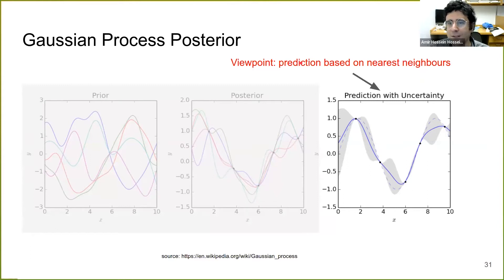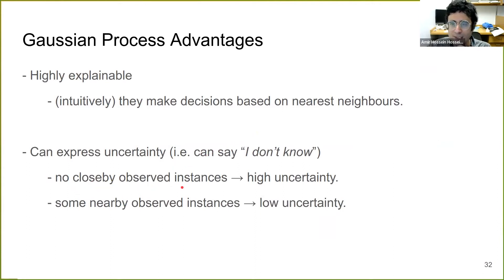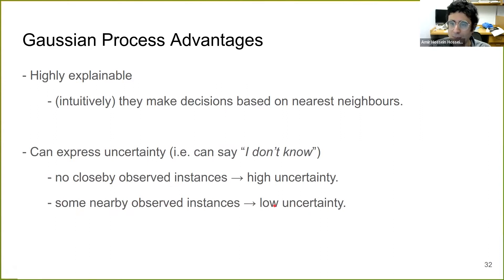We are going to use this nearest-neighbor regression notion a lot in the coming slides. If you are not familiar with Gaussian processes, you can think of them as nearest-neighbor regression. Gaussian processes are highly explainable — they are white box models. Intuitively, they make decisions based on nearest neighbors and can also express uncertainty. When there are no close-by observed instances, they express high uncertainty; when there are nearby observed instances, they express low uncertainty.